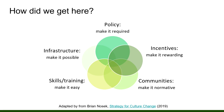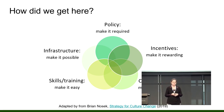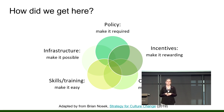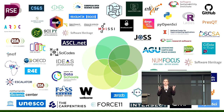To think about how we got here and how this evolution happens, I'm going to use a framework that some of you probably know well from Brian Nozick at the Centre for Open Science. It's a cultural strategy change framework which could be applied to any situation. To get some group of people to a different place with different practices and different processes, a number of different things have to happen. He breaks it down to five levels: Policy, to make it required. Incentives, to make it rewarding. Communities, to make it normative. Skills and training, to make it easy. And infrastructure, to make it possible. We can see in the research software community examples of organisations, projects, or grassroots initiatives that address all of those different parts of the circle.